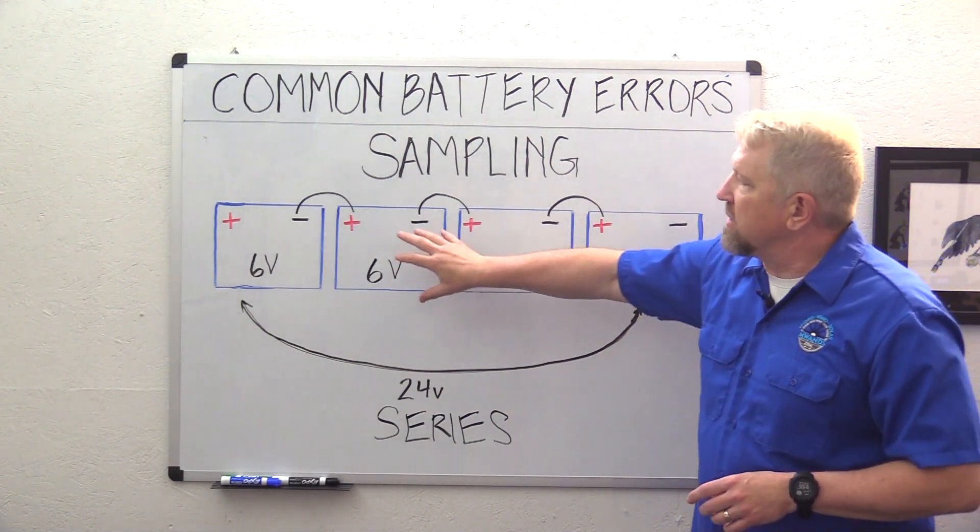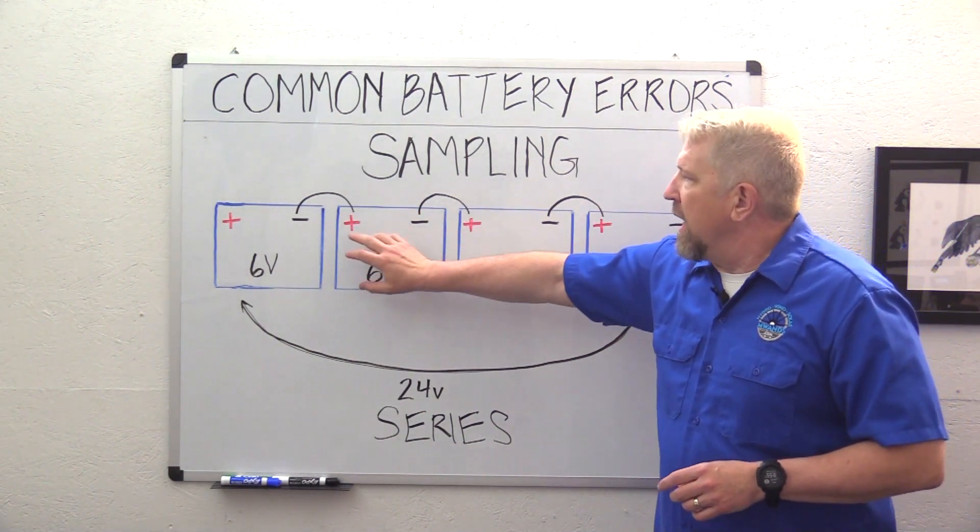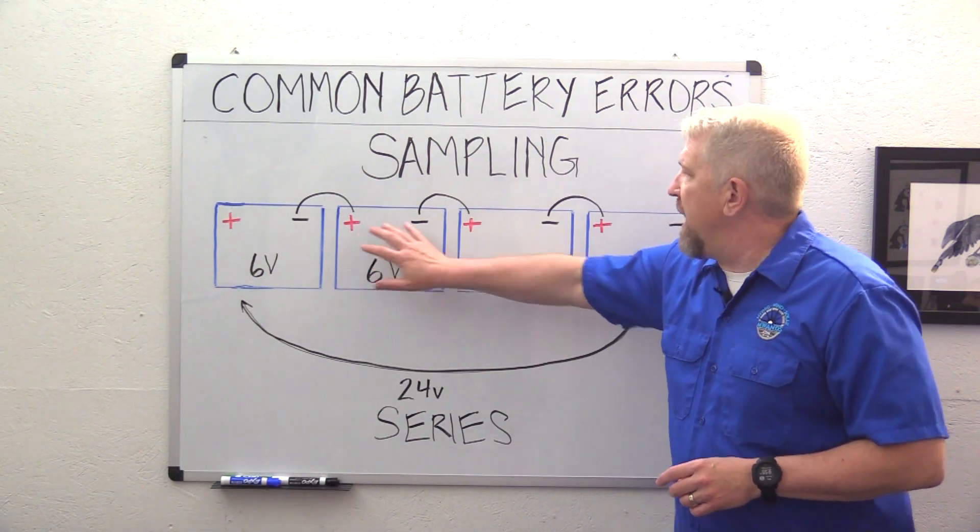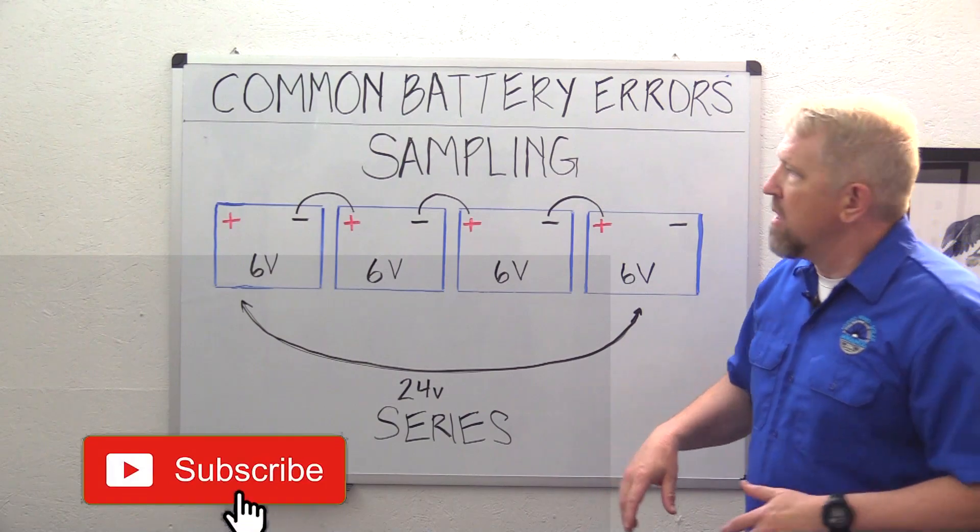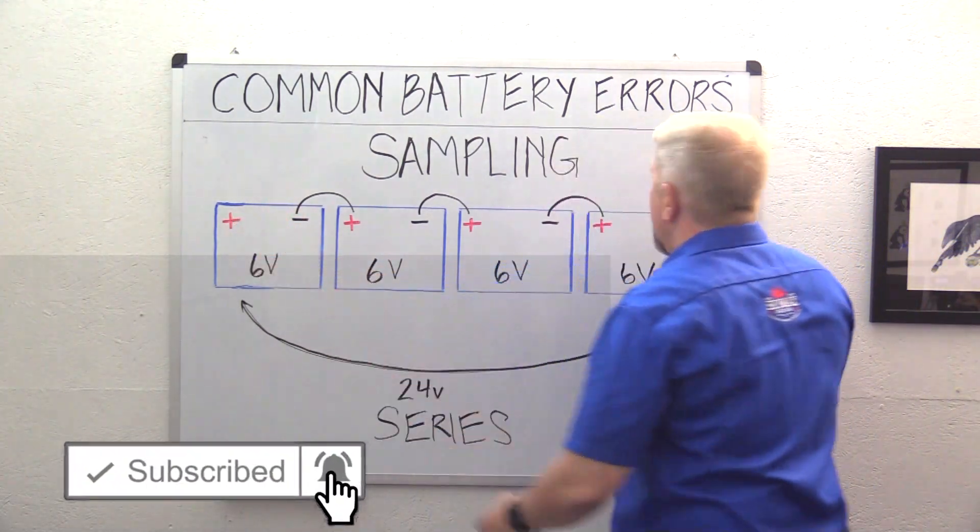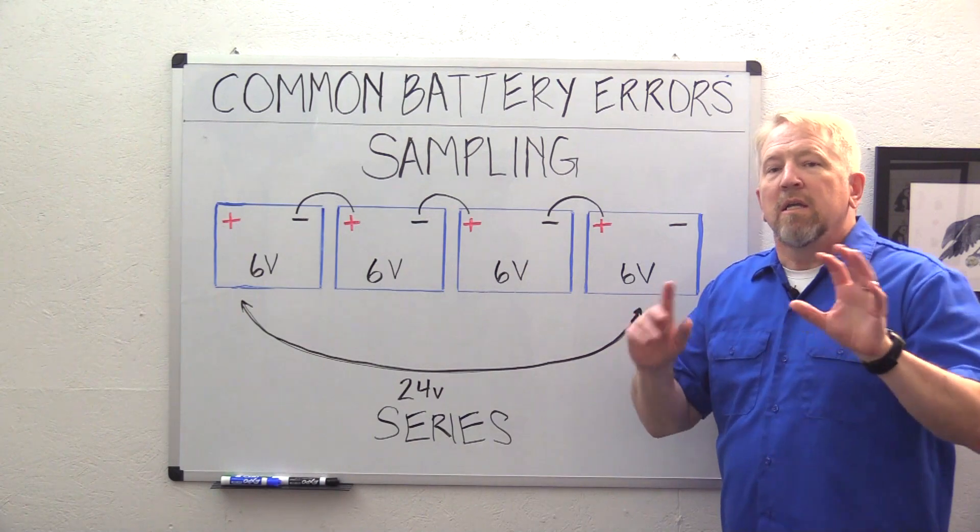Another problem is if we thought we could come here to the middle batteries and put our inverter on the positive and negative here versus the right way of doing it, which is putting our positive and negative on the two master sides of this series.